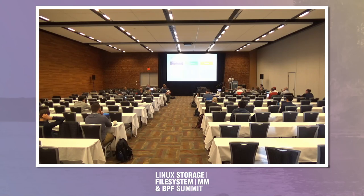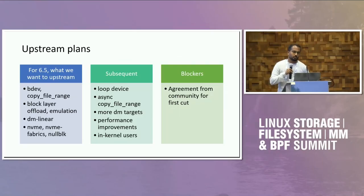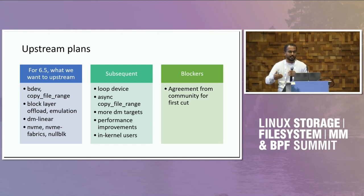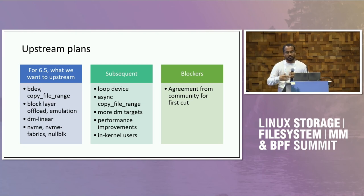The response: DM linear is just one of the targets we've tested, to show that copy offload works. We don't want to enable copy offload for everything and have it break. For other targets it goes through emulation even if the underlying device supports copy offload. It's more about not breaking existing setups — as testing increases and confidence grows, we can start expanding to more targets.